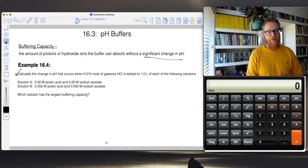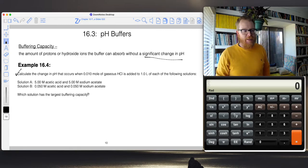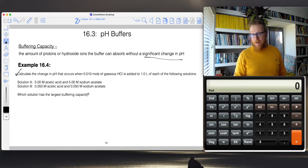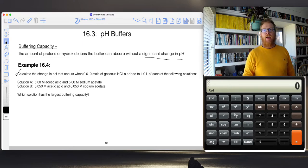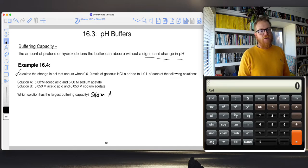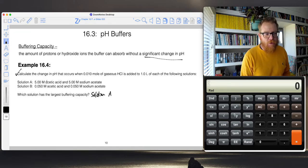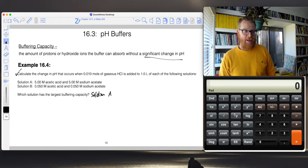The question asks which solution has the largest buffering capacity. Hopefully based on the previous discussion, it becomes obvious which one has to have the largest buffering capacity. Right away, I can see that it has to be solution A because solution A just simply has more buffer present. It's 5 molar acetic acid and 5 molar sodium acetate.